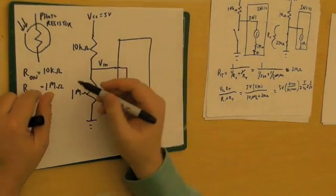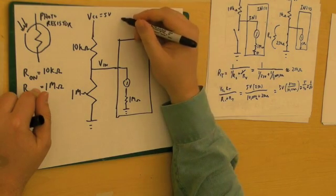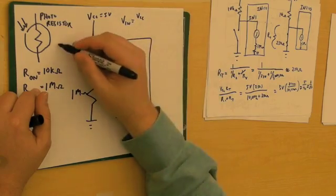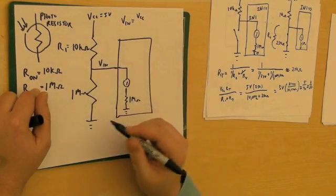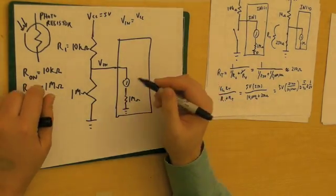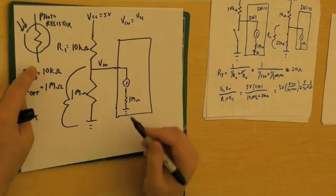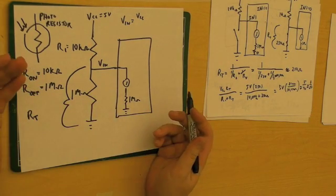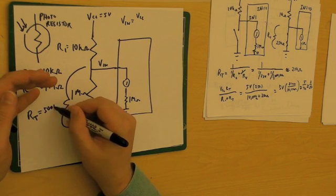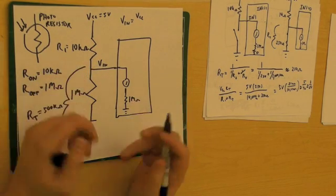To measure VIN, we need the ratio of the resistances. We've got to figure out what this whole resistance is. Because these are two 1-megohm resistors in parallel, this is 500 kilohms, since two equal resistors in parallel are half the value of each.